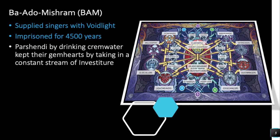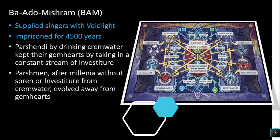Humans would wait until the crem and water separated — several days after a rain — then drink the water with as little crem as possible, because it made them sick. So the Parshendi were getting investiture this whole time, and the Parshmen weren't. After millennia without any spren — the Parshendi also went millennia in dull form, not slave form — the Parshmen went millennia without spren and investiture because they weren't drinking cremwater. Together, I believe those two things are why their Gemhearts evolved away.